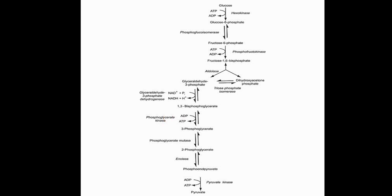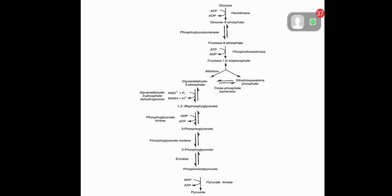The glycolytic reaction involves nine enzymes in total, starting from glucose and ending at pyruvate. ATP is used at steps 1 and 3, and ATP is produced at steps 6 and 9. Additionally, NAD⁺ is converted to NADH + H⁺, which further yields ATP when this NADH passes through the electron transport chain.